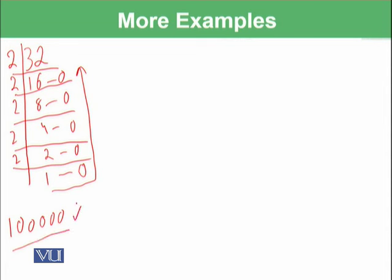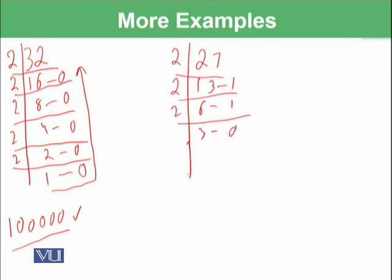Let's do another example. For example, you want to display 27. 2 ones are 2, 2 threes are 6, 1 is left. 2 sixes are 12, 1 is left. 2 threes are 6, 0 is left. 2 ones are 2, and 1 is left. So 1, 1, 0, 1, 1. This is 27.